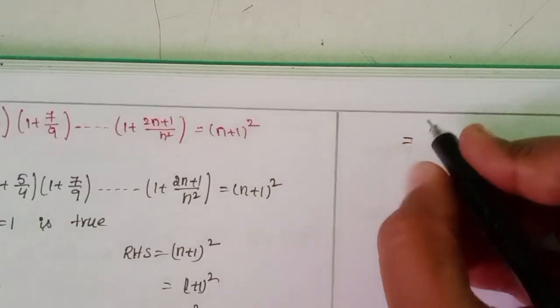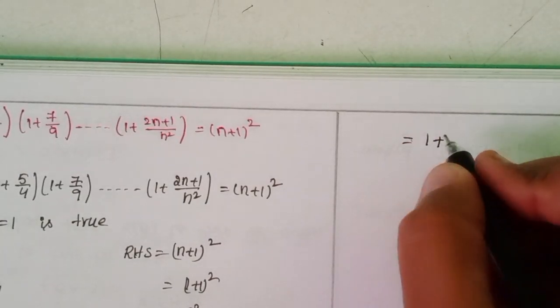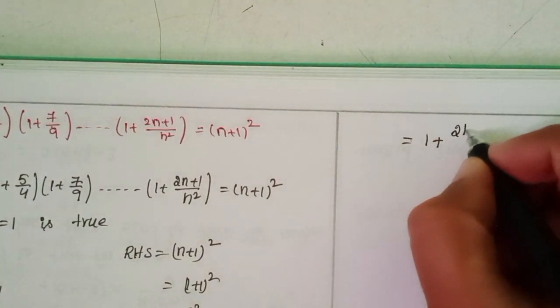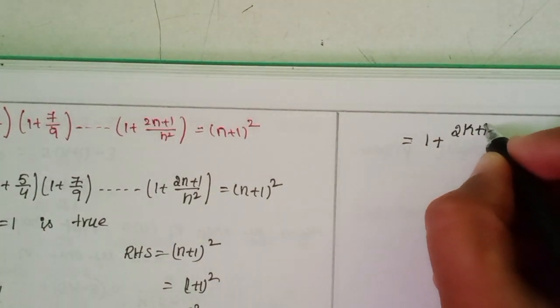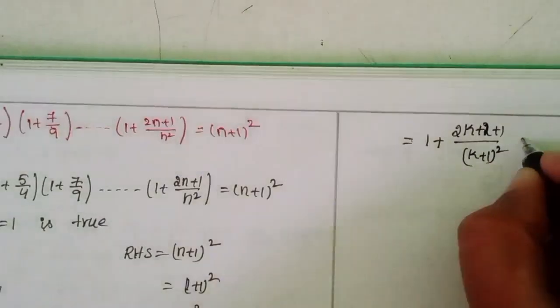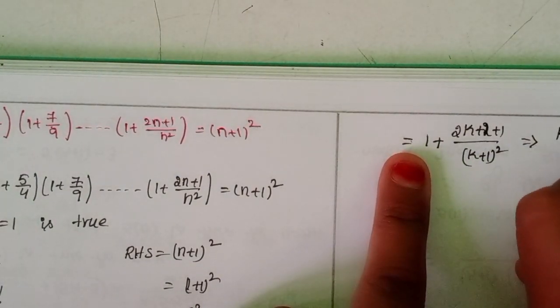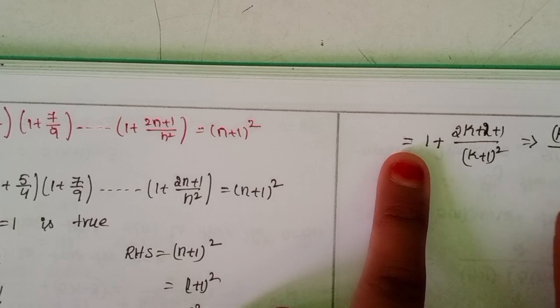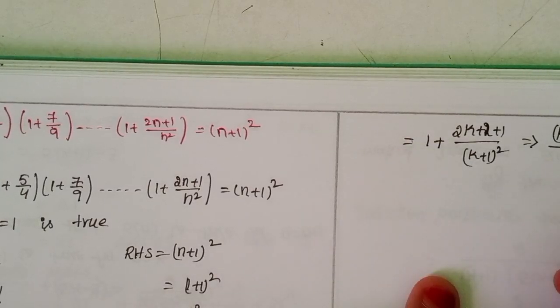Simplify: 1 + (2k+2+1)/(k+1)² = 1 + (2k+3)/(k+1)². By cross multiplication: [(k+1)² + (2k+3)] / (k+1)².